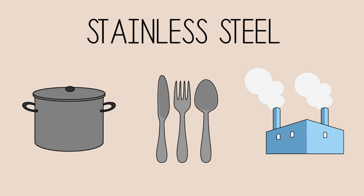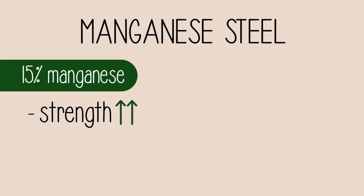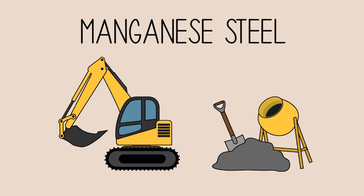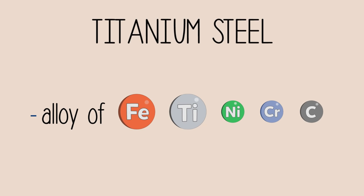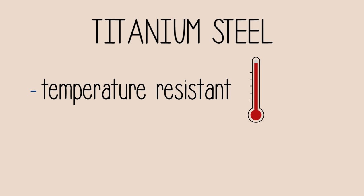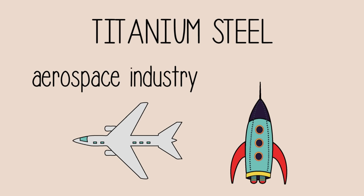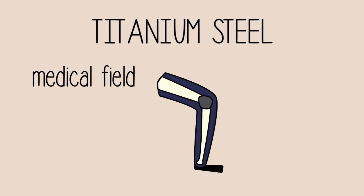An even stronger alloy is manganese steel, with a 15% composition of manganese. Because of its incredible strength, manganese steel is used to make railway tracks, equipment used to crush rocks, and cement mixtures. An alloy of iron and titanium, and a small percentage of nickel, chromium, and carbon, is titanium steel. An interesting property is that it is very resistant to high temperatures. Titanium steel is also lighter than other alloys of iron, and because of these properties, it has extensive applications in the aerospace industry. It is used to make the outer bodies of airplanes and spacecrafts, and also has applications in the medical field, such as making artificial joints and in hip replacement surgeries.